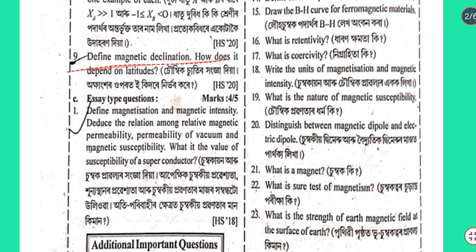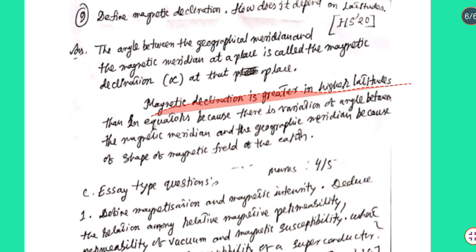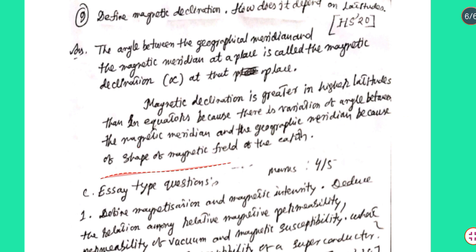Question number 9: Define magnetic declination. How does it depend on latitude? The angle between the geographical meridian and the magnetic meridian at a place is called magnetic declination at that place. Magnetic declination is greater at higher latitudes than at the equator, because of variation of the angle between the magnetic meridian and geographic meridian due to the shape of Earth's magnetic field.